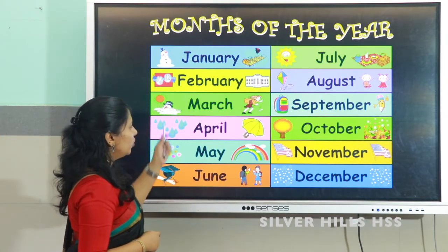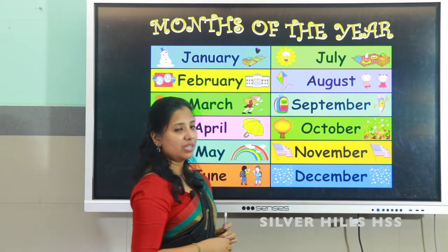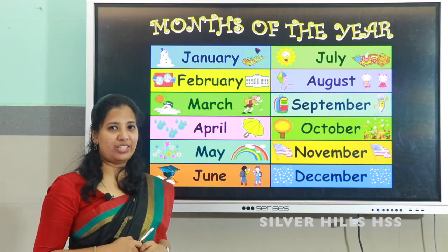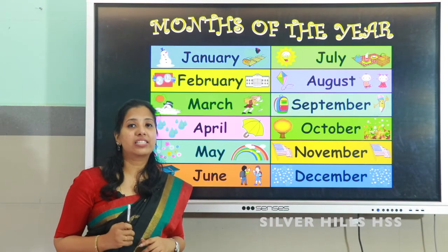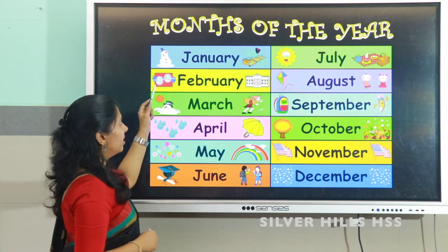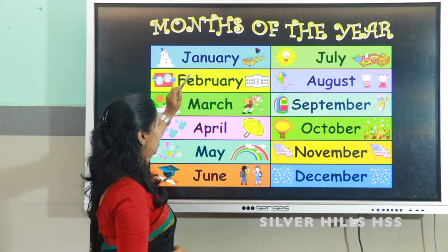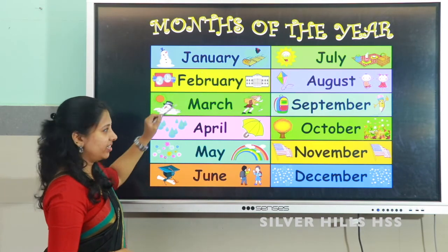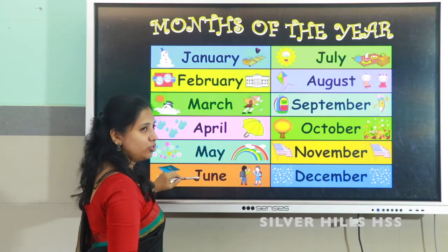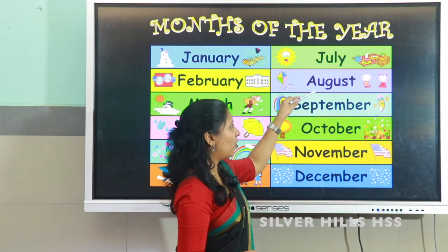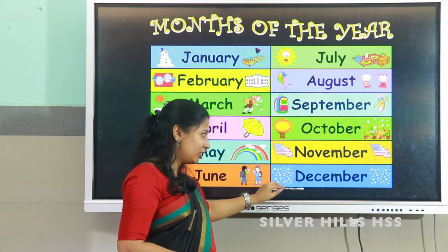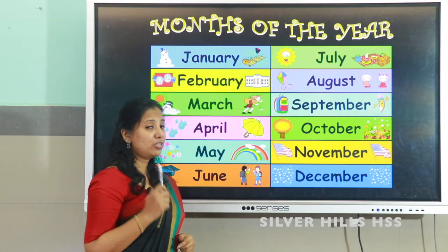Now we will move on to the months of the year. You all know that in a year there are 365 days, and a leap year has 366 days. The months are: January, February, March, April, May, June, July, August, September, October, November, and the last month is December.